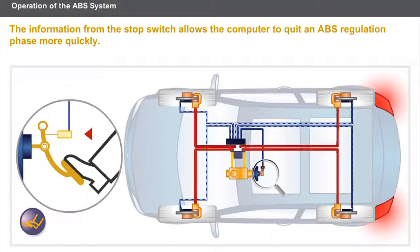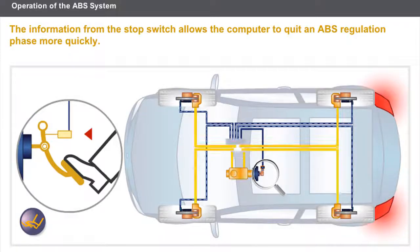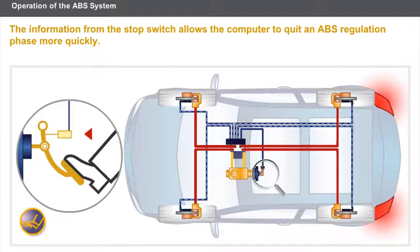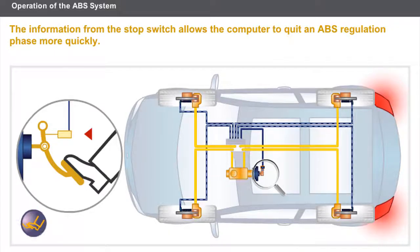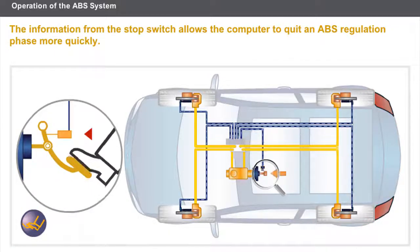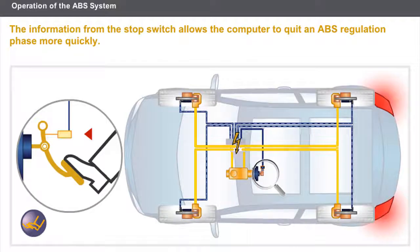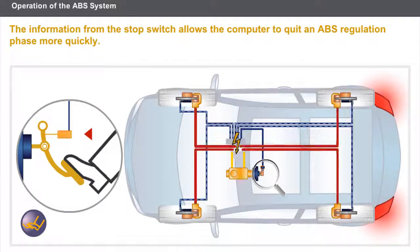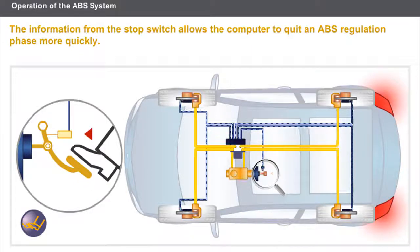In addition to lighting the brake lights under braking, the stop switch sends a signal to the ABS computer. The information from the stop switch allows the ABS computer to determine the start of braking in order to anticipate braking regulation. In the same way, when the pedal is released, the stop switch information allows the computer to quit an ABS regulation phase more quickly.